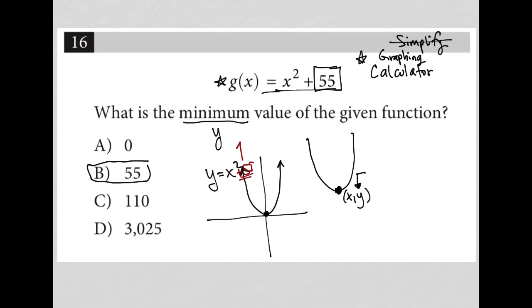that gives me a vertical shift up 55 units. If this is where 55 is, my parabola will now look like this. It just moves up 55 units. So the y-value, the minimum value, would be 55, choice B.